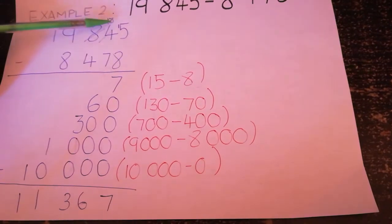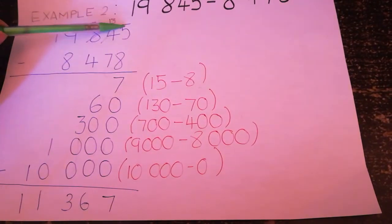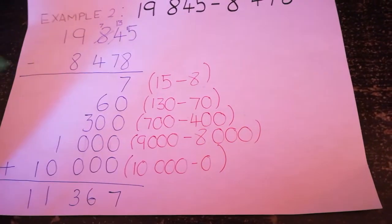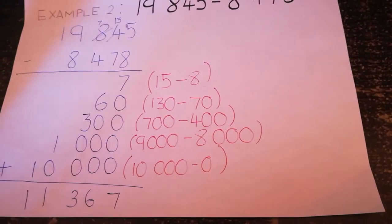5 minus 8, it cannot minus 8. We need to borrow 1 from the 4. So it becomes 15. So 15 minus 8 is 7. I suggest you put it here on the side so that it will make it much more easier for you to understand.